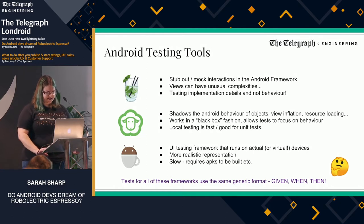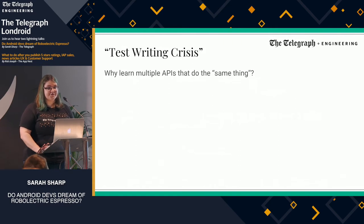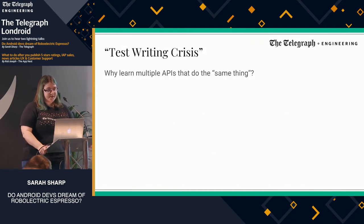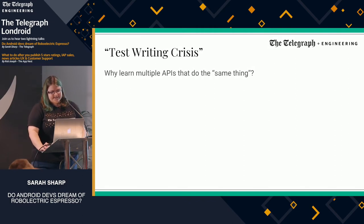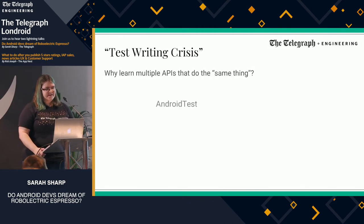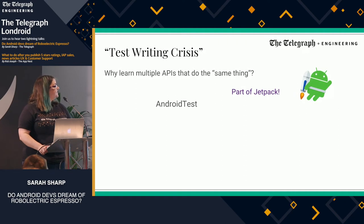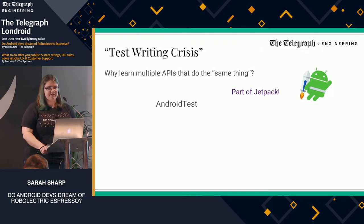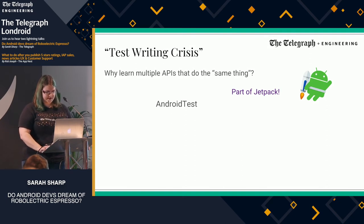Last year at Google I/O, Google referred to what was known as the "test writing crisis." There were many tools to do effectively the same kind of thing on different platforms and in different methods, but they're using different APIs. So if you have new people coming into your system, they have to learn different notations to do the same thing, which is not ideal. The Android test library was announced and came out as part of the Jetpack set of libraries, trying to find a way of unifying this experience.